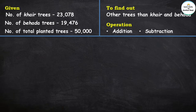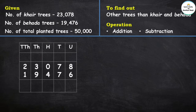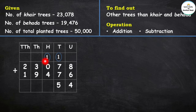Let's do addition: 23,078 plus 19,476. 8 plus 6 is 14, carry 1. 7 plus 7 is 14, plus 1 is 15, carry 1. 0 plus 4 is 4, plus 1 is 5. 3 plus 9 is 12, carry 1. 2 plus 1 is 3, plus 1 is 4. The result is 42,554.